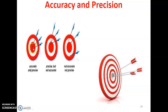Here in the first diagram, it is accurate and precise. Precise is nothing but repeatability or reproducibility of the measuring process — it should give the reading again and again. All the readings are accurate because they are on the target, so it is accurate, and all the readings are almost the same, so it is also precise.